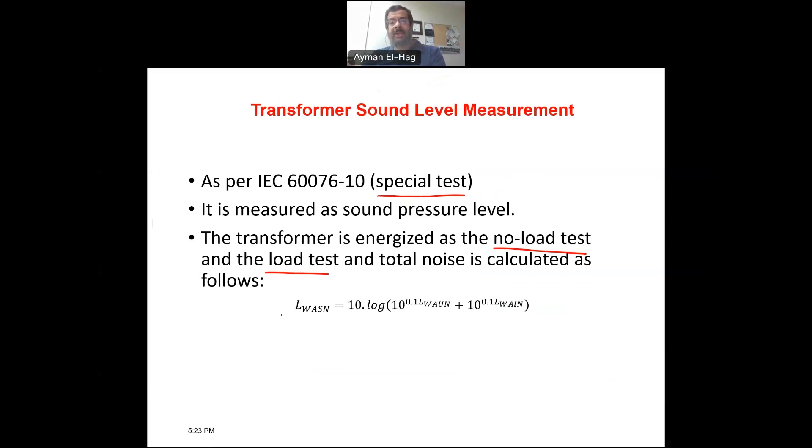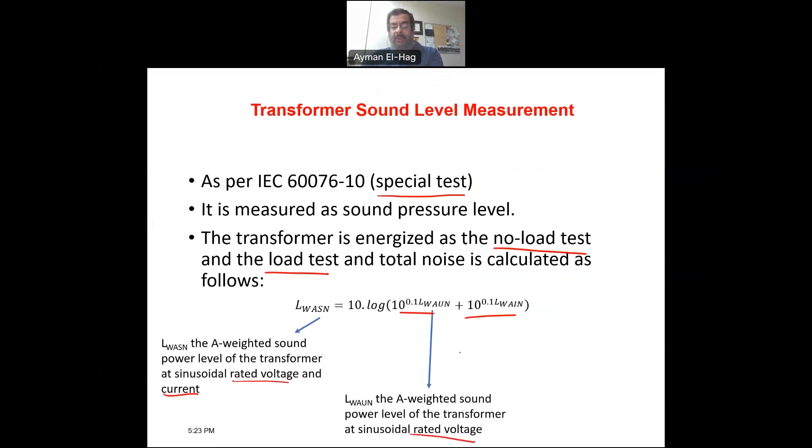So the summation of these two factors is basically the weighted sound power level due to the rated voltage and current. This component is due to the rated voltage and this component is due to the rated current. So you do the test twice, add them using this formula, and then this is the estimated level of noise from the transformer coming from both the voltage and the current.